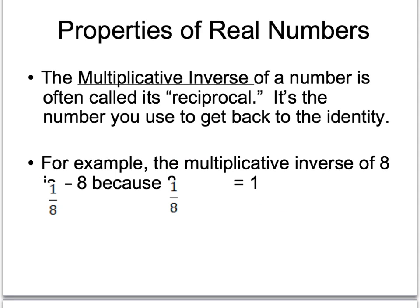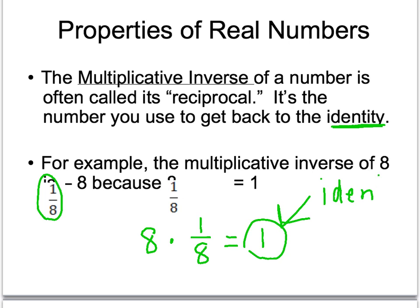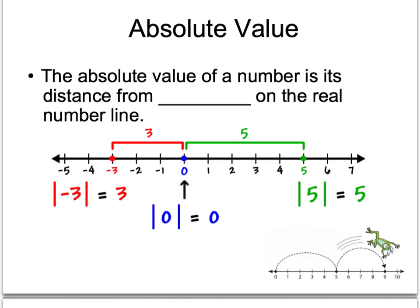You're going to use the multiplicative inverse in much the same way because that's also a number that you're trying to use to get back to the identity. Okay, so, for example, the multiplicative inverse of eight is one over eight because, oh, that's messed up again. Eight times one over eight is equal to one, and one represents the identity in multiplication. So, the multiplicative inverse of eight is one over eight and we often refer to that as the reciprocal.